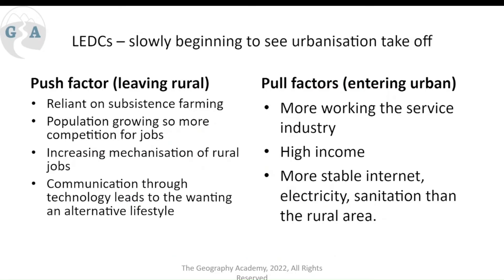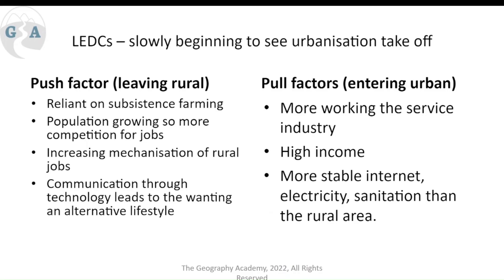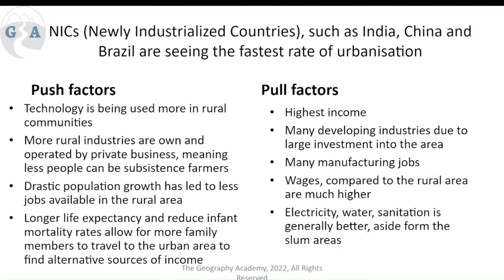LEDCs are slowly beginning to see urbanization take off. People are leaving rural areas because there are fewer jobs — they were working in primary industries and subsistence farming. Now they're looking for jobs in manufacturing. Pull factors into urban areas include higher income, electricity, sanitation, internet, and opportunities. People are willing to endure more difficult conditions for a better life in the long term. Newly industrialized countries — particularly the BRICS and MINT countries — are key groups to keep in mind here.